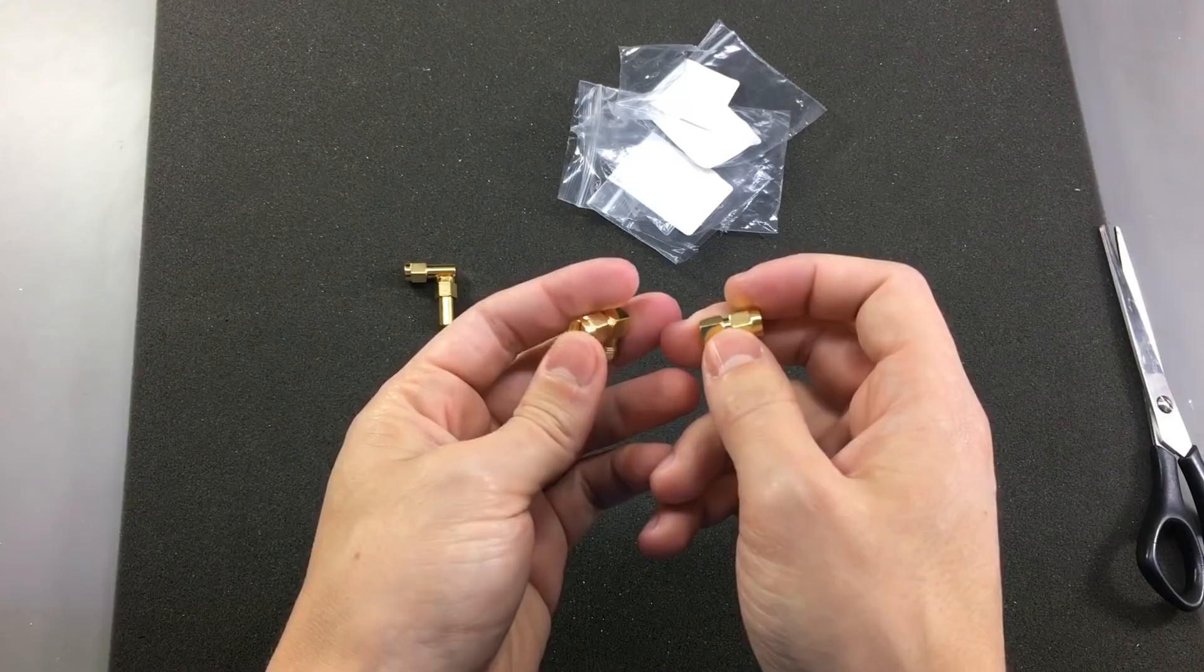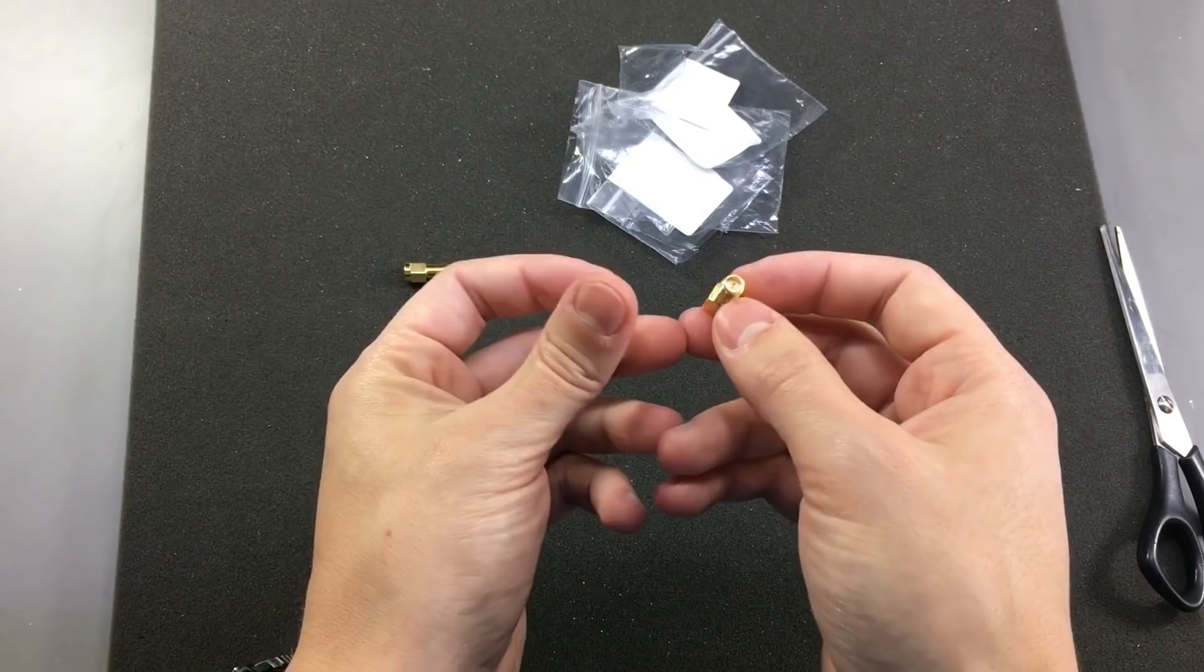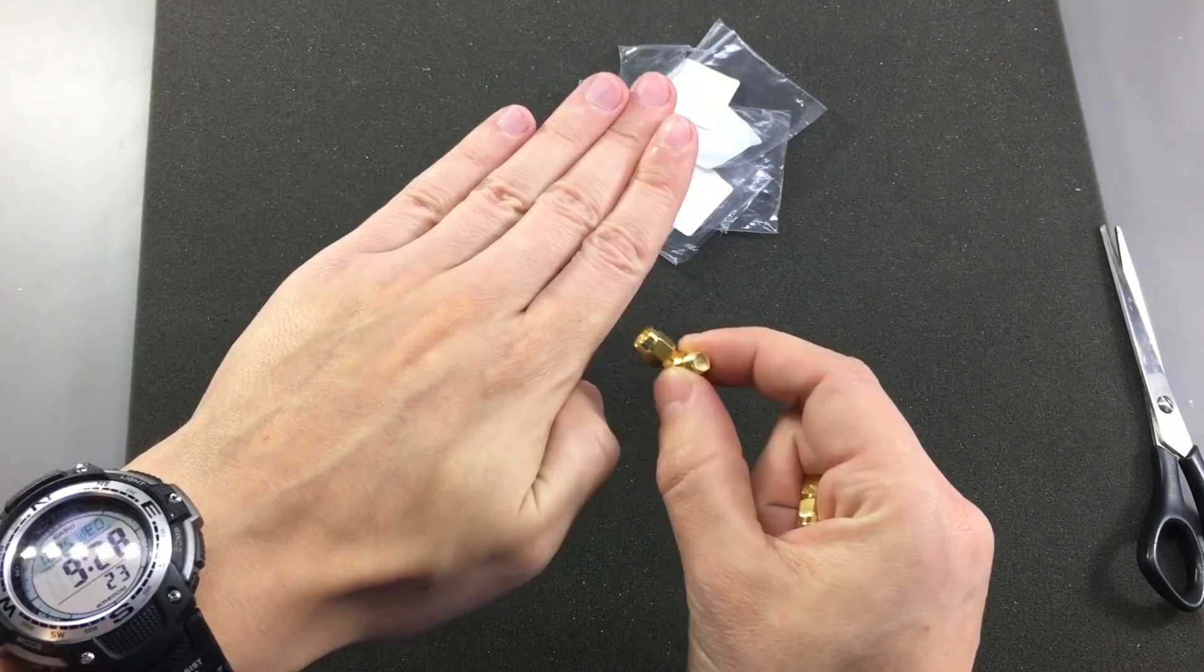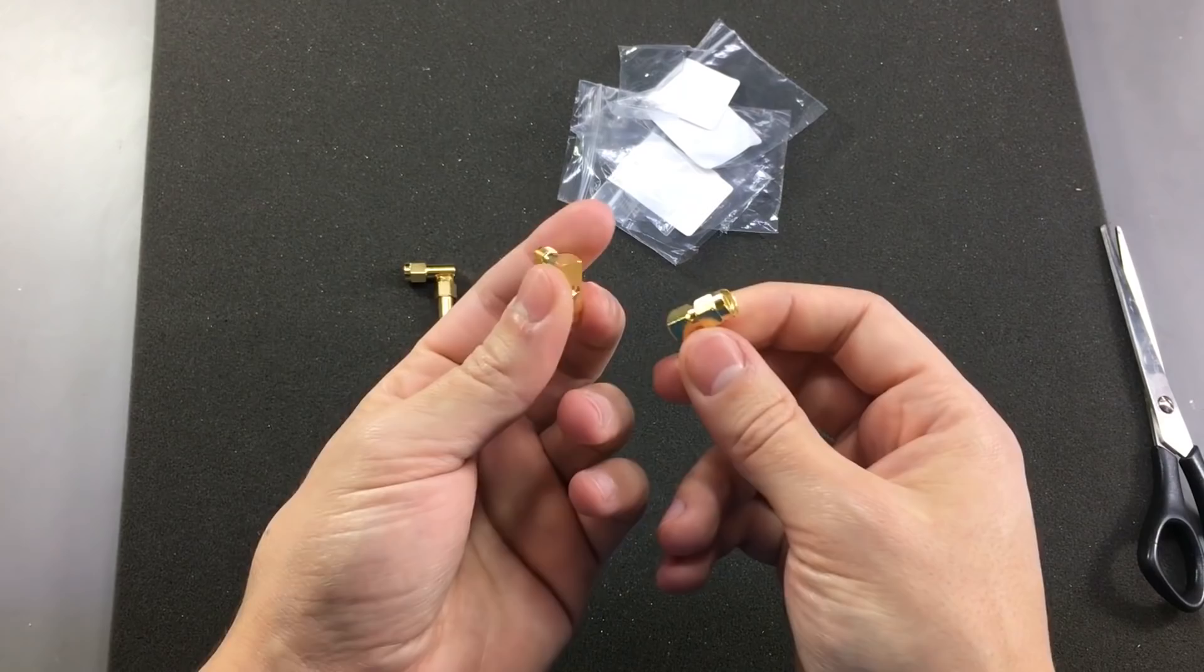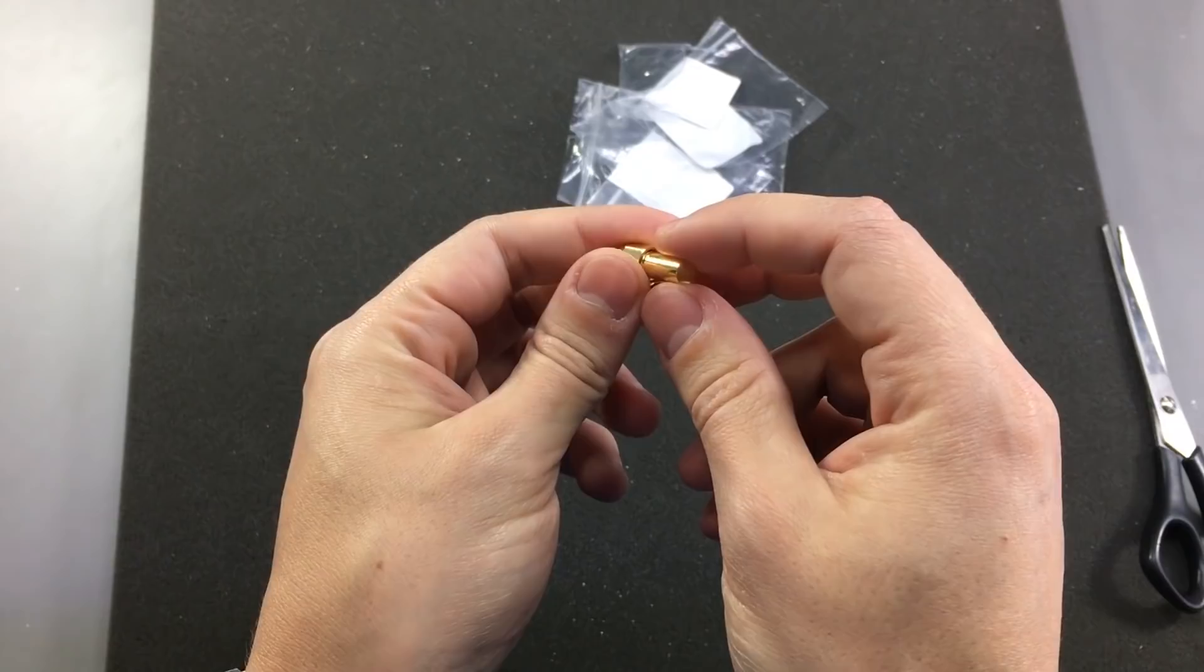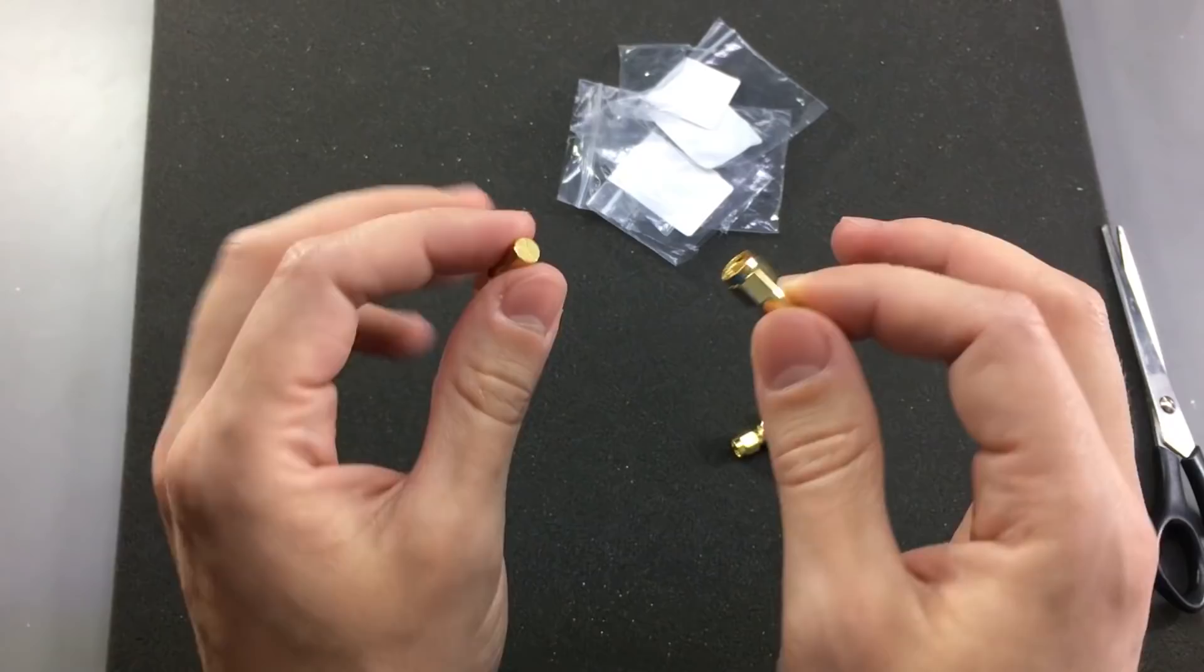Next up I have this set of RP SMA to SMA right angle connectors which will be used for my FPV gear because most of the times you have the video transmitter laying flat but you want your antenna to be sticking up from the transmitter so you need one of these 90 degrees adapter. And I also got these 50 ohm terminators for RP SMA connectors.